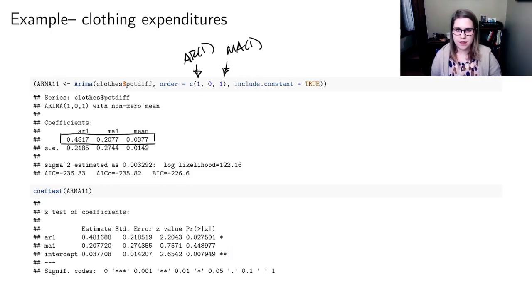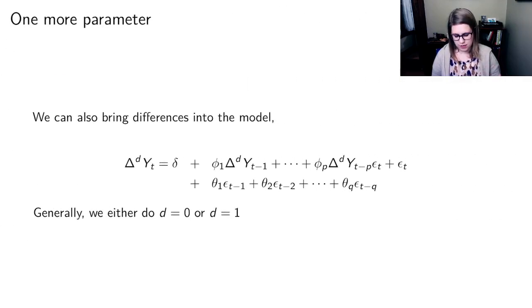You might have noticed that in the order parameter here, I have three things that I can give, there's the AR, there's the MA, and then there's something that we've been leaving as zero. And so that last parameter is differences. So we can bring differences into the model.